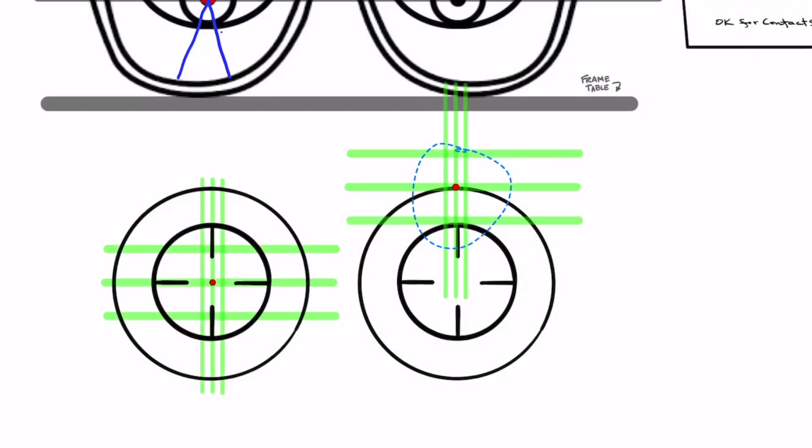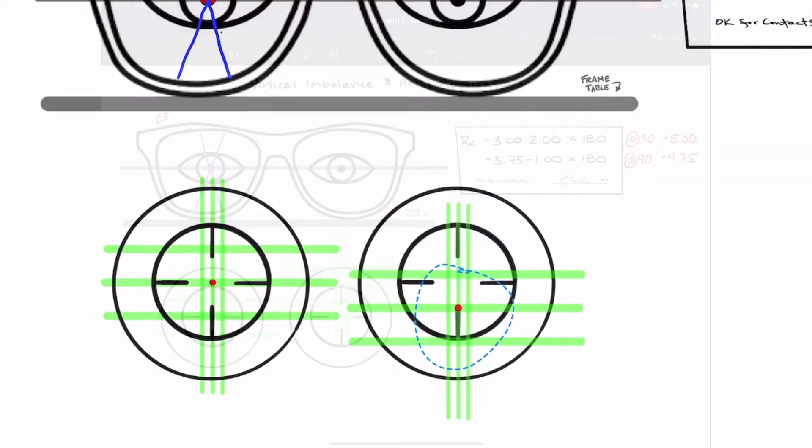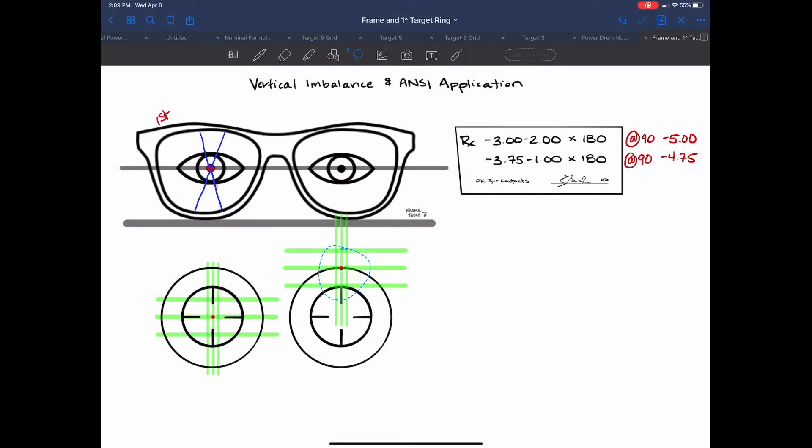This could be where it's at right now at one diopter base up it could be a half of a diopter it could be a third it could be a quarter it could be down. So wherever it is without moving the frame table you're going to center it and then you're going to read the amount of prism.